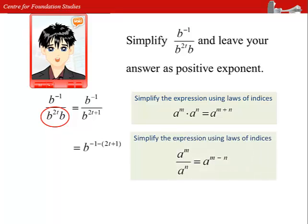Hence, we get b to the power of negative 1 minus bracket 2t plus 1. Simplifying the algebra expression in the power, we get b to the power of negative 2t minus 2.